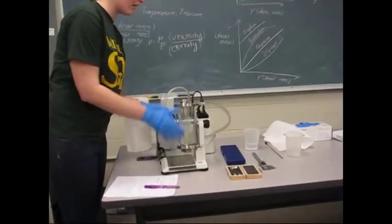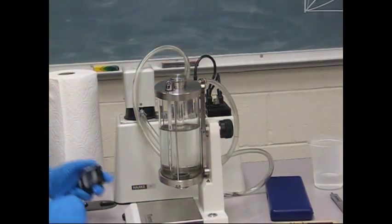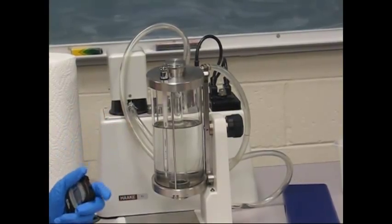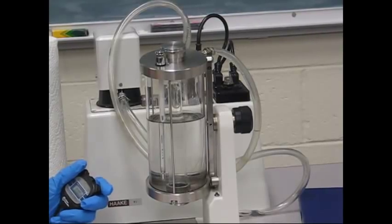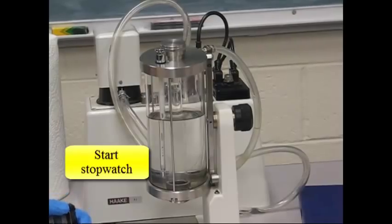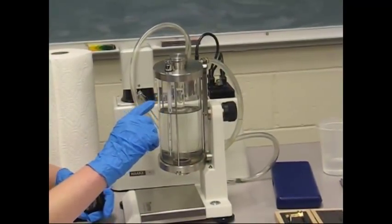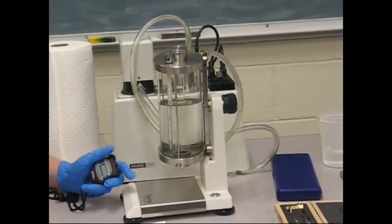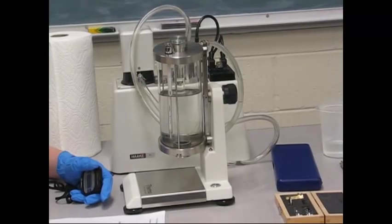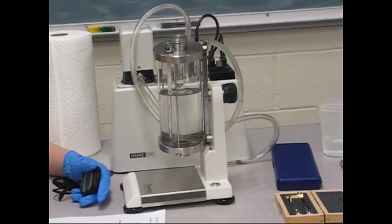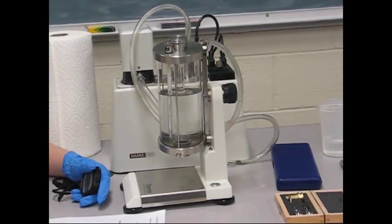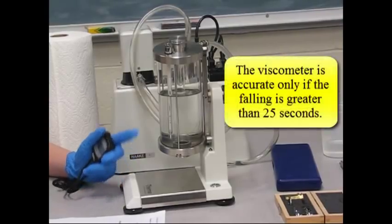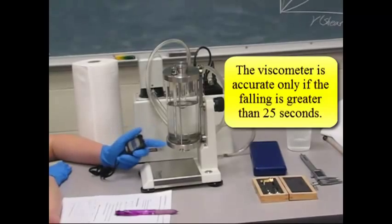So we're going to flip the viscometer, and we're going to watch it as it crosses the line. When it crosses the line, start the stopwatch. You can choose to start the stopwatch when the bottom of the ball crosses the line, when the middle of the ball crosses the line, or when the top of the ball crosses the line. Just be sure you're consistent when you start and stop the stopwatch. And remember that this falling ball viscometer is only accurate if the falling time is greater than 25 seconds.